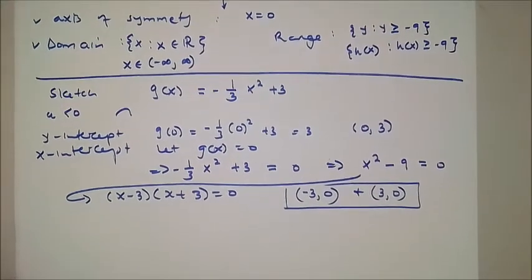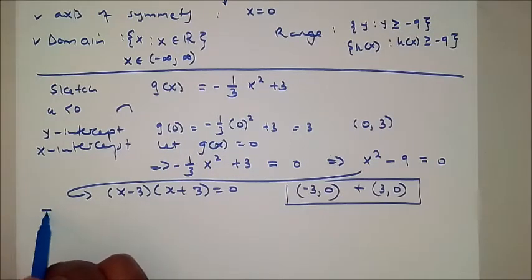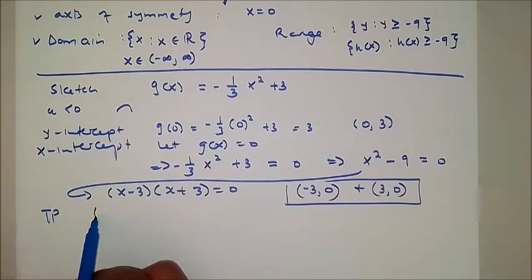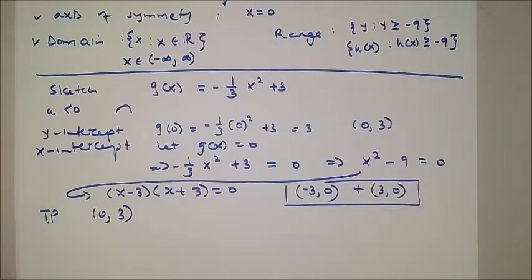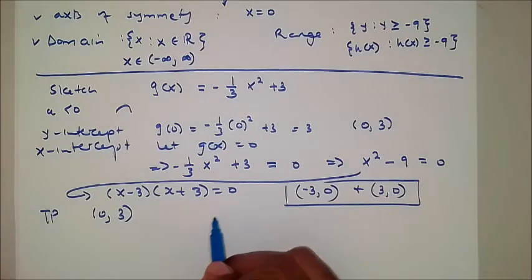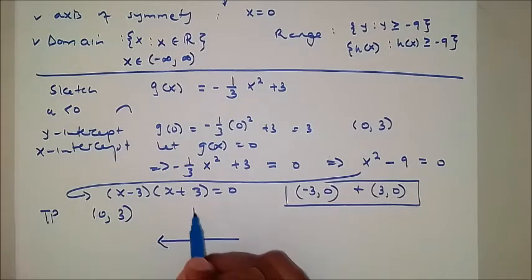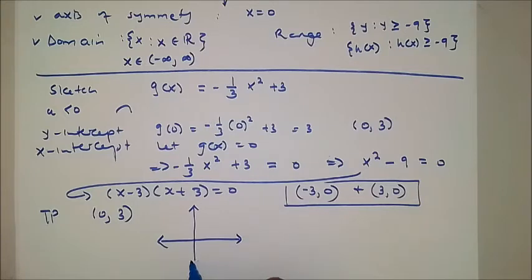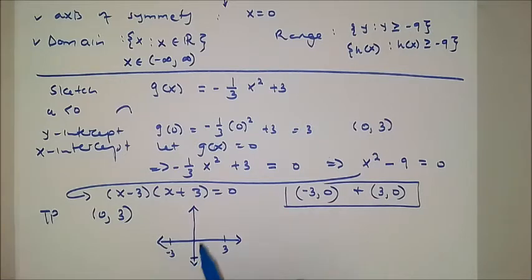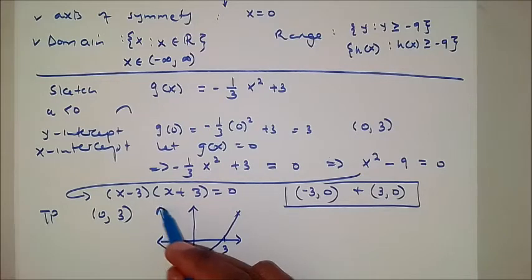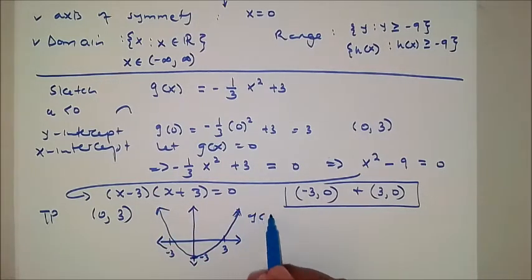The turning point of the function is at (0, q), and q is 3, so the function turns at (0, 3). Let's draw the function: the y-intercept is at 3, the graph passes through negative 3 and positive 3 on the x-axis, and the turning point is at (0, 3). There is your graph of g of x.